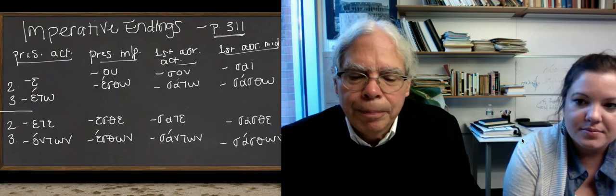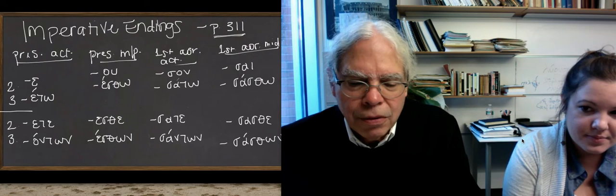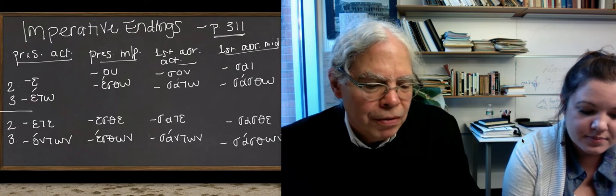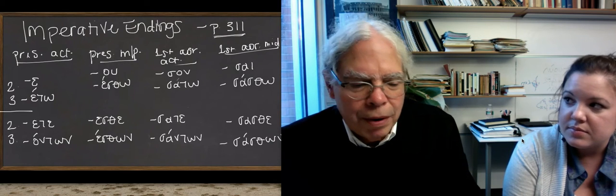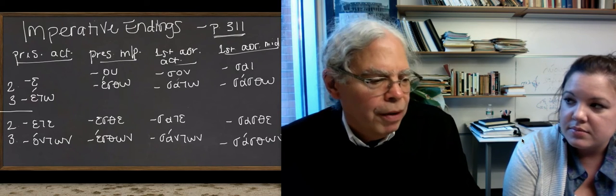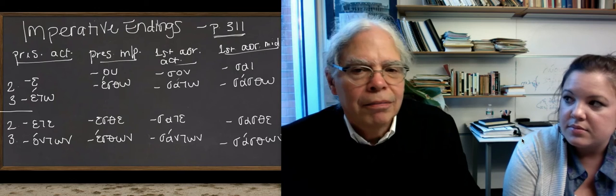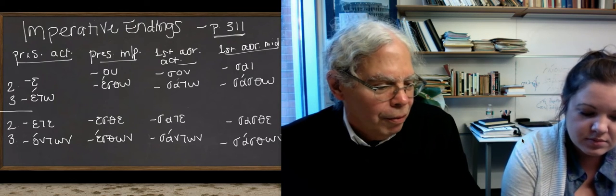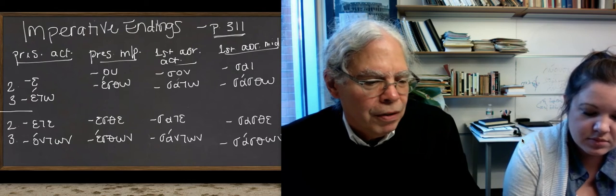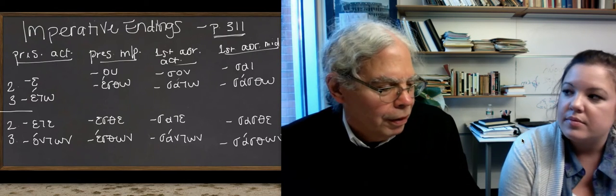In Indo-European, the language from which Greek was descended, there was one form. We can reconstruct it. It consisted of the verbal stem with an ending. In other words, it's like a dictionary entry of a word, the verb in its most basic form.